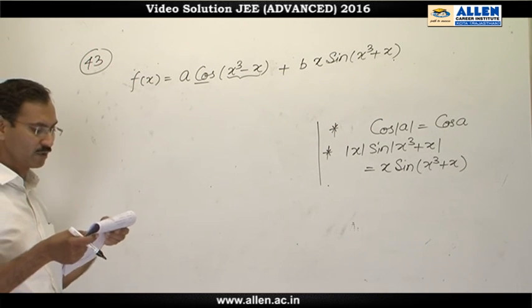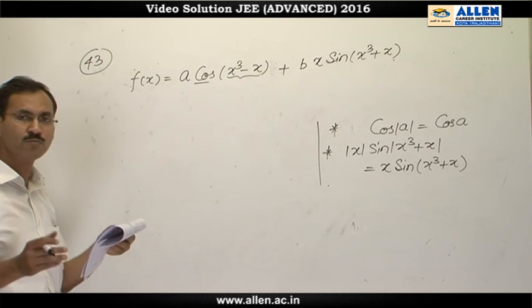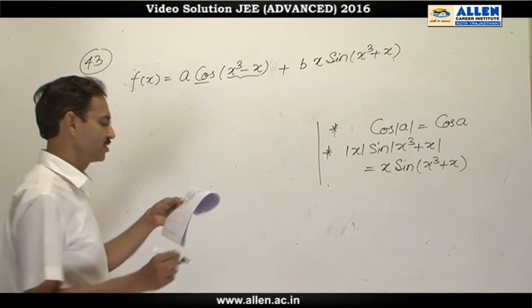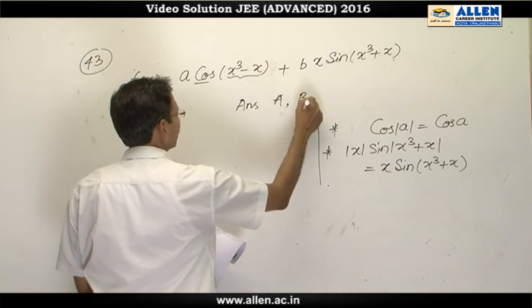Therefore, the correct choices will be capital A and capital B. Whatever will be the value, real value of small a and small b, that does not matter—your function will remain continuous and differentiable. So the correct answer is capital A and capital B.